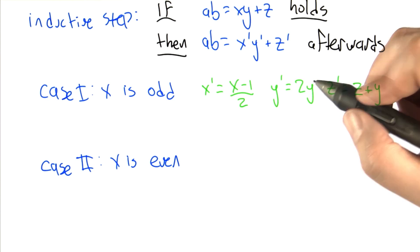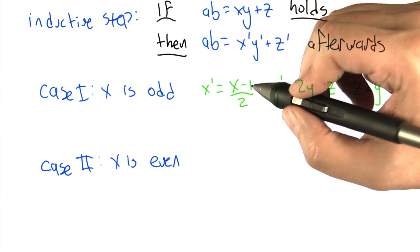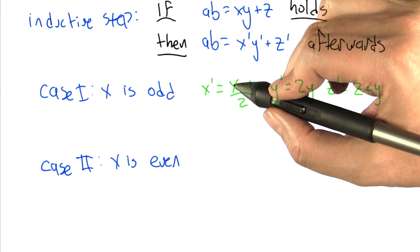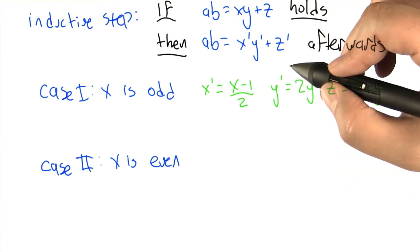So in the case when x is odd, the first thing we do is add z and y together, make that the new value of z. Then we do a bit shift on x, which in this case is equivalent to subtracting 1 to make it even and smaller, then halving it. And y, meanwhile, gets doubled.